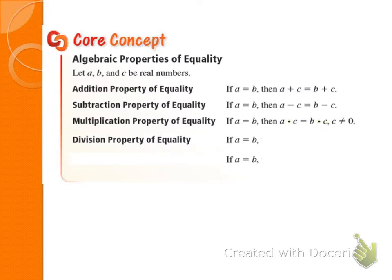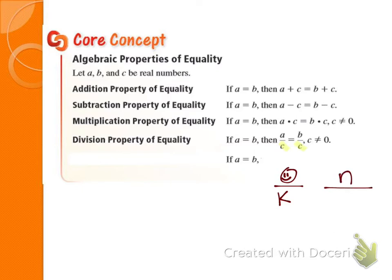The division property of equality means we can divide the same number on both sides and the equation remains equal — divide both sides by C. Again, C cannot equal zero, because you cannot divide a number by zero. You can divide zero by a number — that's okay — but you cannot divide a number by zero. You'll need to remember this, especially for Algebra 2.